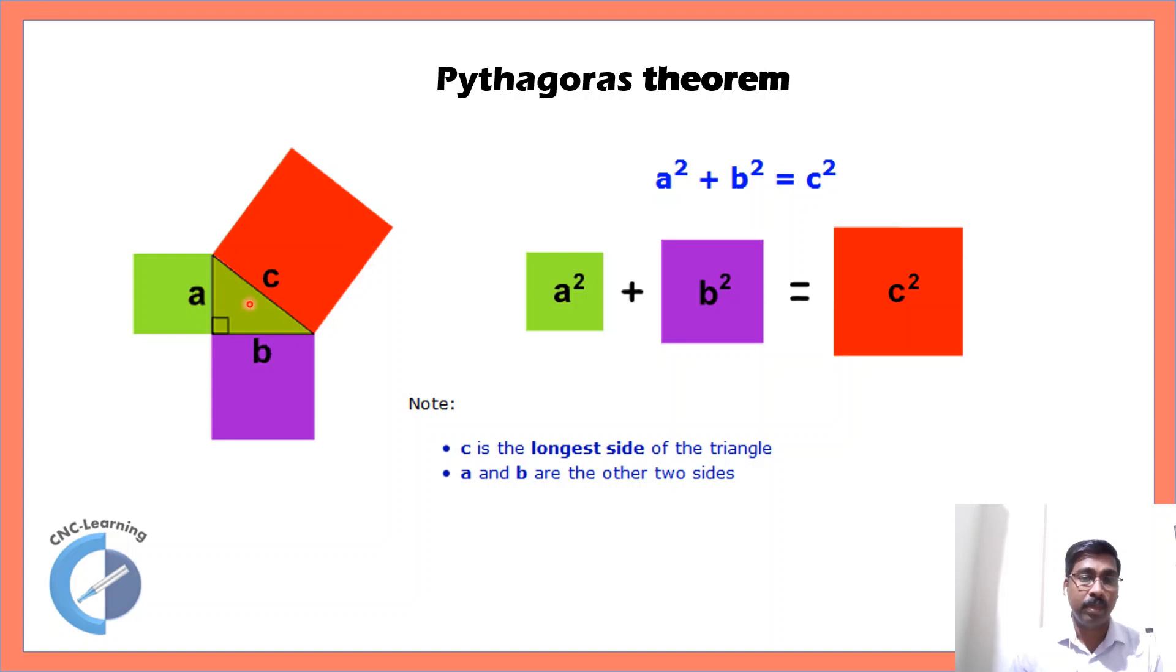is equal to the squares made by this line and this line. So, C square, which is the area of this square, equals B square, that means area of this square, plus A square, that means area of this square. That means, the longest side square equals sum of squares of the smallest sides. That is Pythagoras theorem.